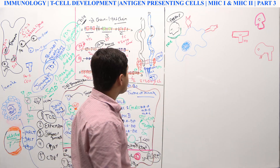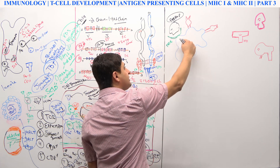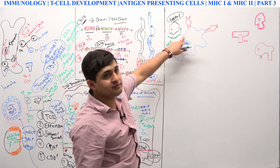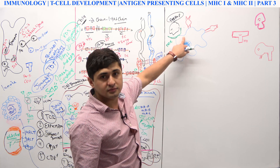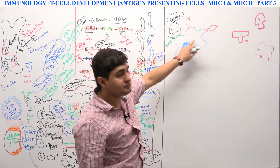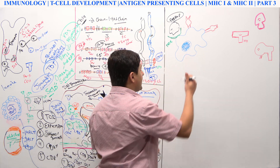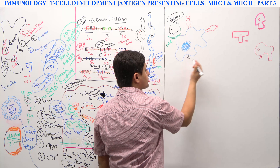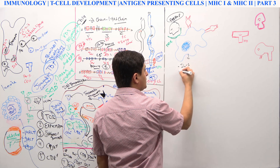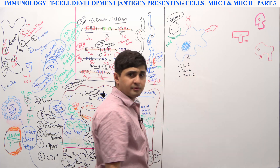This recognition is done through pattern recognition receptors — it could be Toll-like receptor 1, 2, 3, 4, and so on. Once the pathogen is recognized, that results in signal transduction — there will be activation of nuclear factor kappa B and other transcription factors — resulting in secretion of pro-inflammatory cytokines.